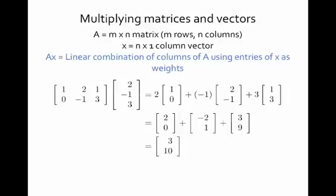The 2 in the vector becomes a weight on the first column. The negative 1 in the second entry of that vector is a weight on the second column. And the 3 in the third entry of the vector is a weight on the third column.